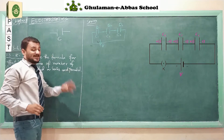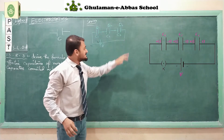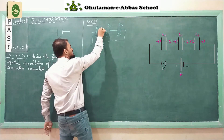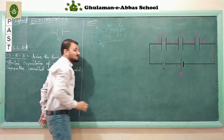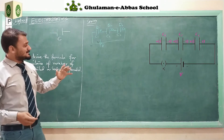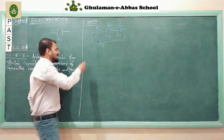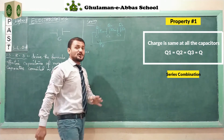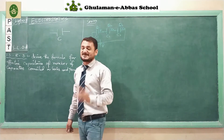Simultaneously, the potential applied by the battery will be divided among the three capacitors. The potential at capacitor C1 is V1, at C2 the potential is V2, and at C3 the potential is V3. The first property of series combination is that the amount of charge in each capacitor is the same.